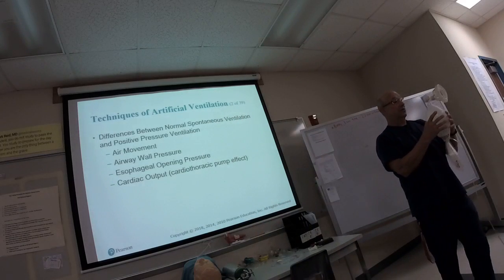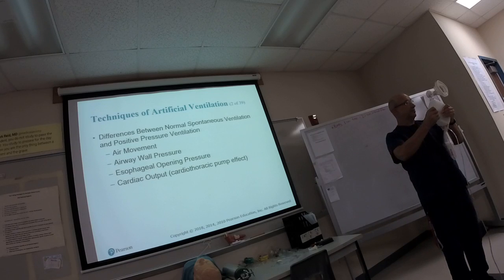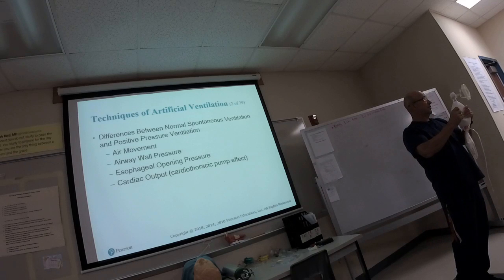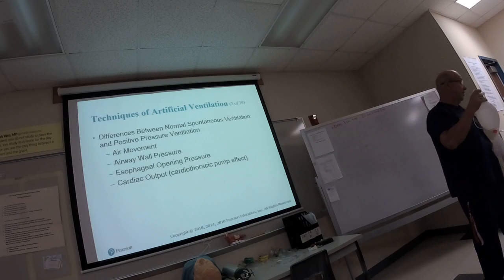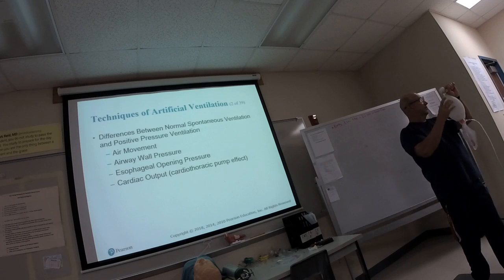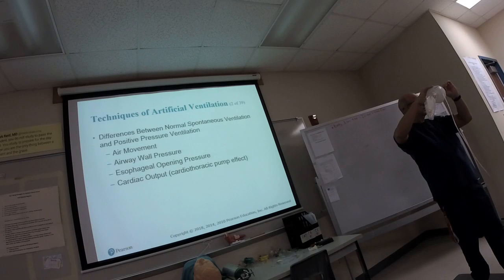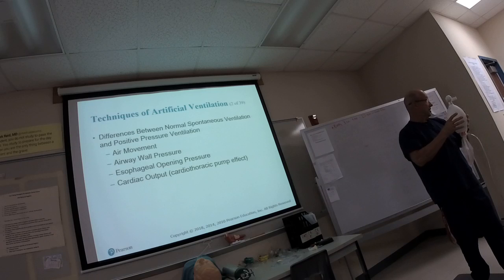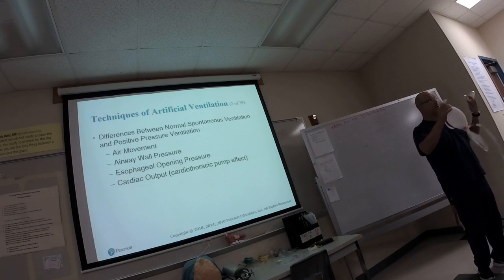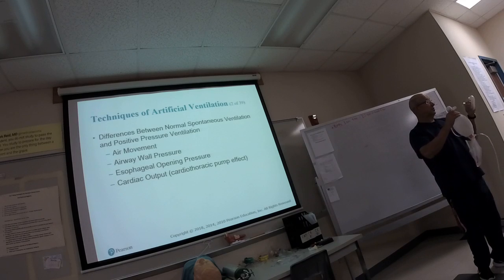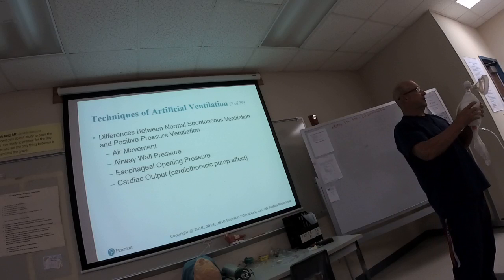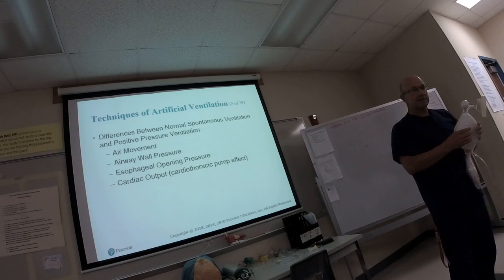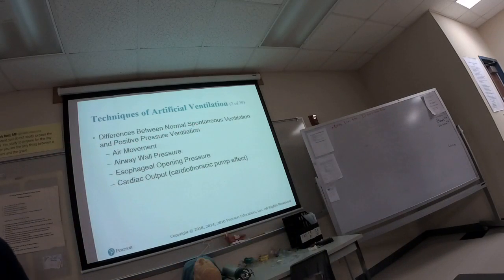BVM sizes are interchangeable — you can put an infant mask on an adult BVM body, though you could over-ventilate a child that way. Sometimes you may need to adjust the mask size if it doesn't fit the patient. Be concerned about airway pressures: if you squeeze too hard on an infant, you might create a pneumothorax. So we don't want to do that.